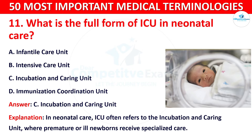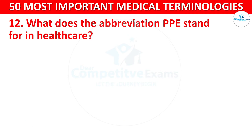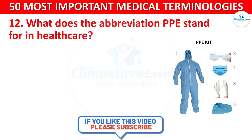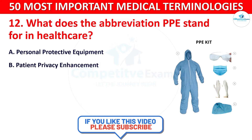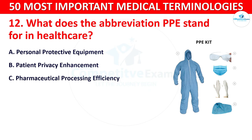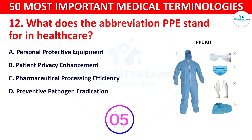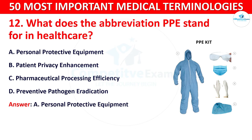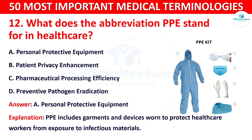Question number 12: What does the abbreviation PPE stand for in healthcare? Your options are: A) Personal Protective Equipment, B) Patient Privacy Enhancement, C) Pharmaceutical Processing Efficiency, or D) Preventive Pathogen Eradication. The correct answer is Personal Protective Equipment. PPE includes garments and devices worn to protect healthcare workers from exposure to infectious materials.